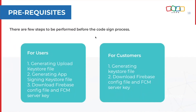Now we come to the prerequisites. For rebranding the user Android app, we need to generate the upload KeyStore file. This requires the Java Development Kit installed in your system. This is followed by the app signing KeyStore file for users. If you need push notifications for your application, you need to download the Firebase configuration file from the Google Play console and also the FCM server key. Similarly for customers, you just need to generate a KeyStore file and download the Firebase config key and FCM server key.